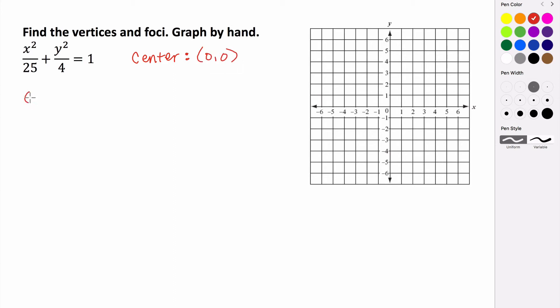Because you can imagine this as being x minus zero quantity squared divided by 25, plus y minus zero quantity squared divided by four equals one. So that's going to put our center at zero, zero. So let's look at some of the values that we know, and then use that to try and graph.